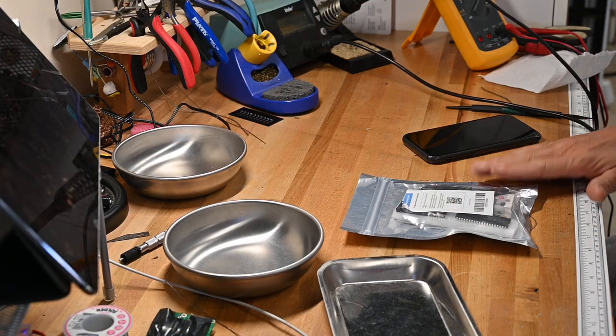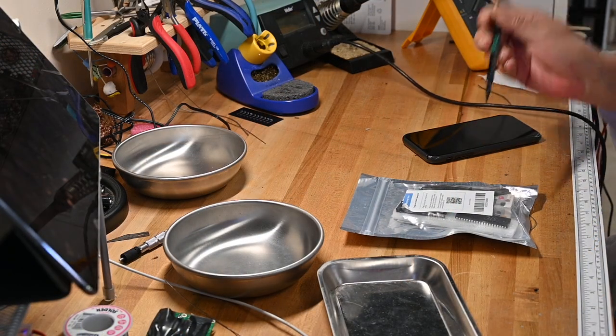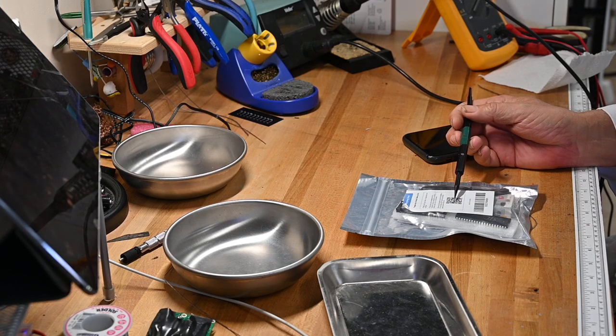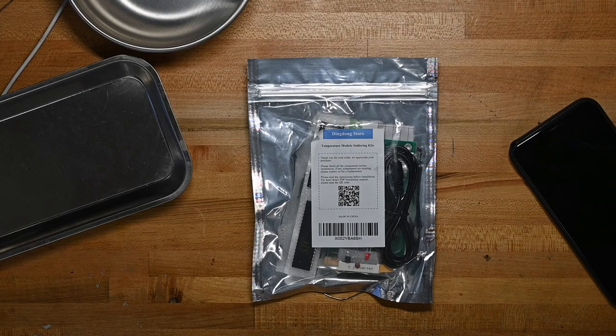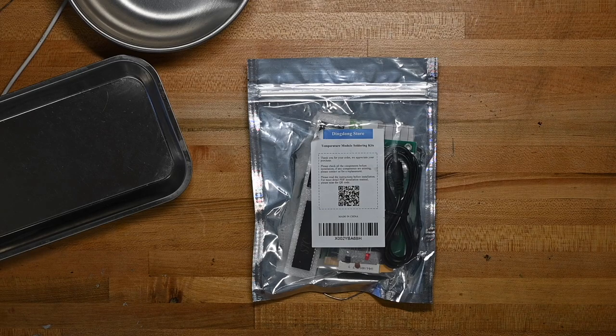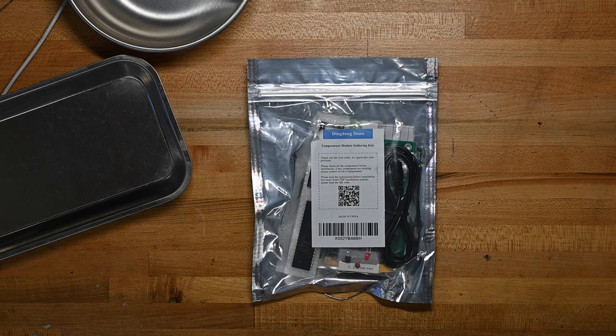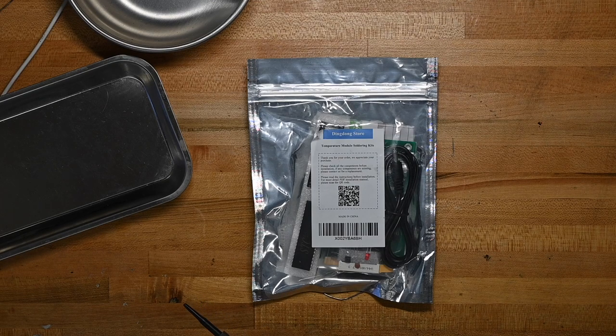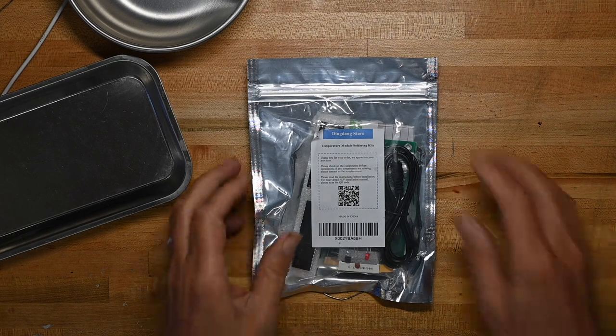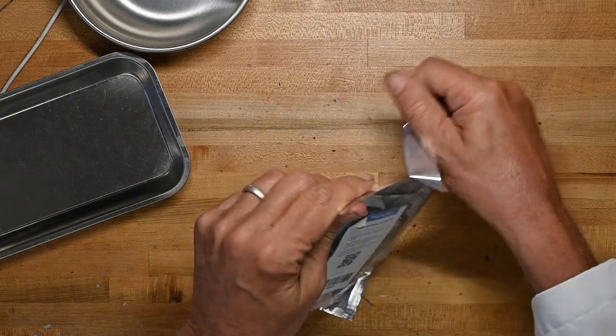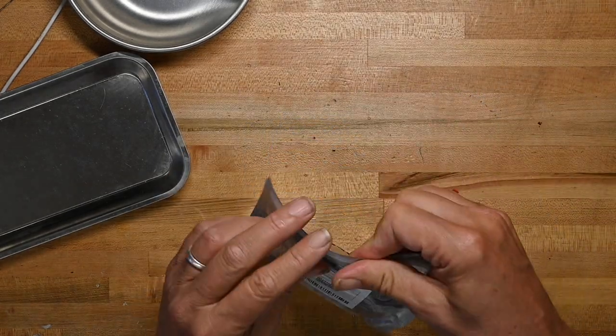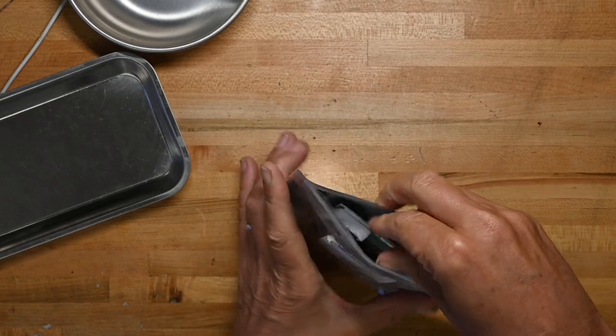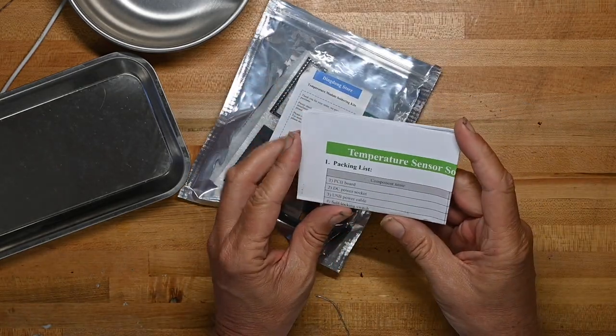Let's see what we got. We've got a bag and on the bag is thank you for your order and here's a QR code to allow us to get an online manual, even though I believe there's a piece of paper in here which will tell us everything we need to know. Let's rip the bag open gently. It's from the Ding Dong store which we've done lots of kits from them.